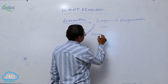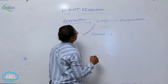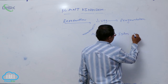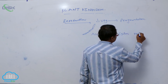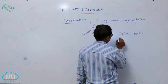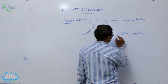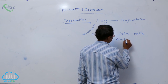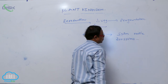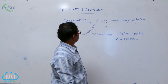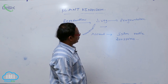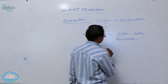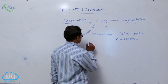After that, asexual reproduction takes place by spores. These spores are motile and are generally known as zoospores. Motile spores are known as zoospores.